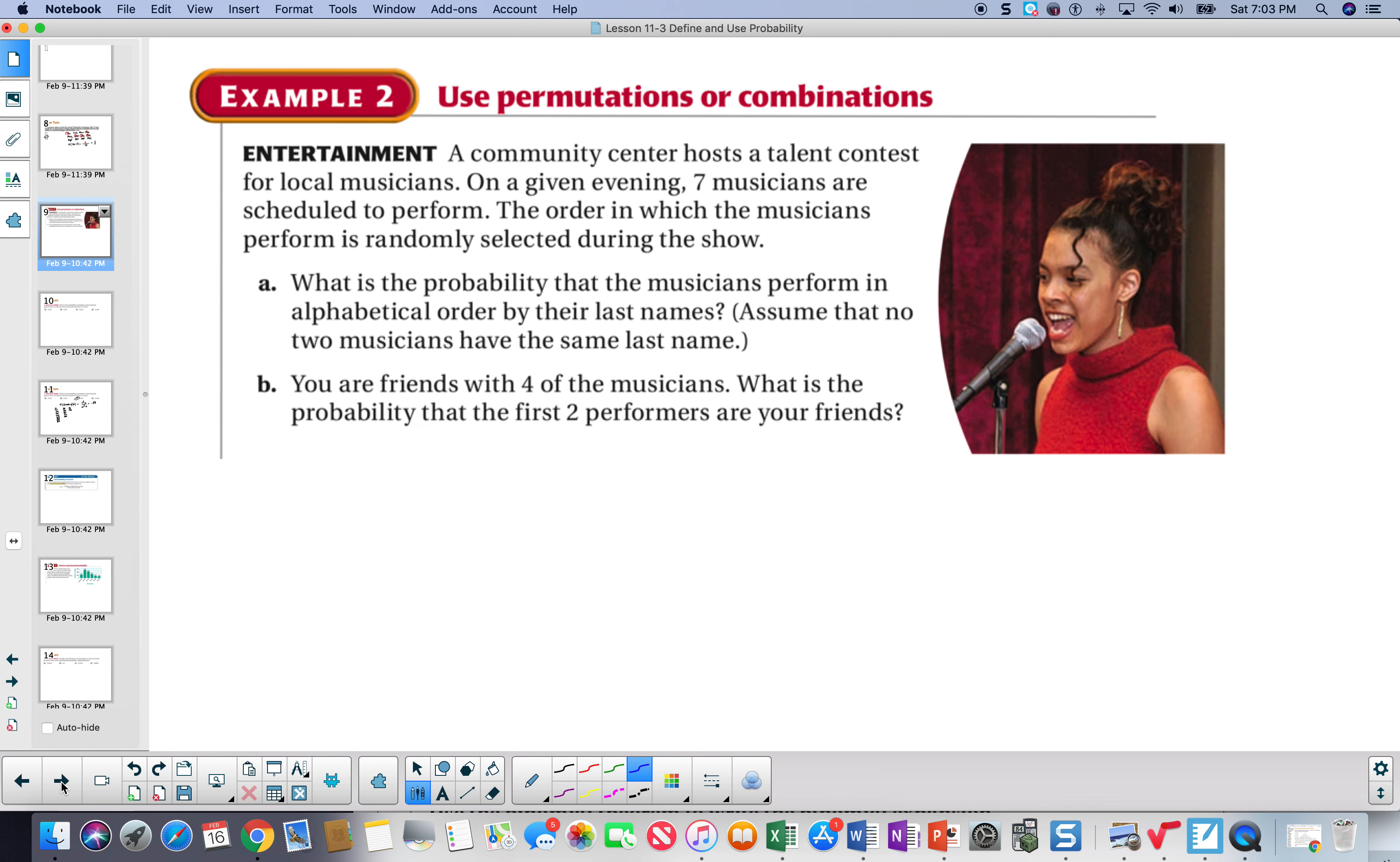Let's take a look at how probability is used with permutations or combinations. Suppose we had a community event where we had a talent contest, and there are 7 musicians scheduled to perform. Part A, what's the probability that the musicians perform in alphabetical order? So, probability of alpha order. Now, alpha order will only be 1 out of all the permutations that can take place. So, a permutation of 7 chosen 7 at a time. 7 out of 7 at a time is 7 factorial.